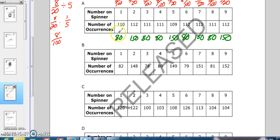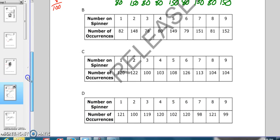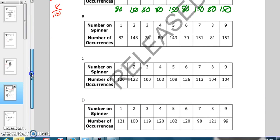Table A starts with 110. That's not close to 80. Table C starts with 120. Table D starts with 121.